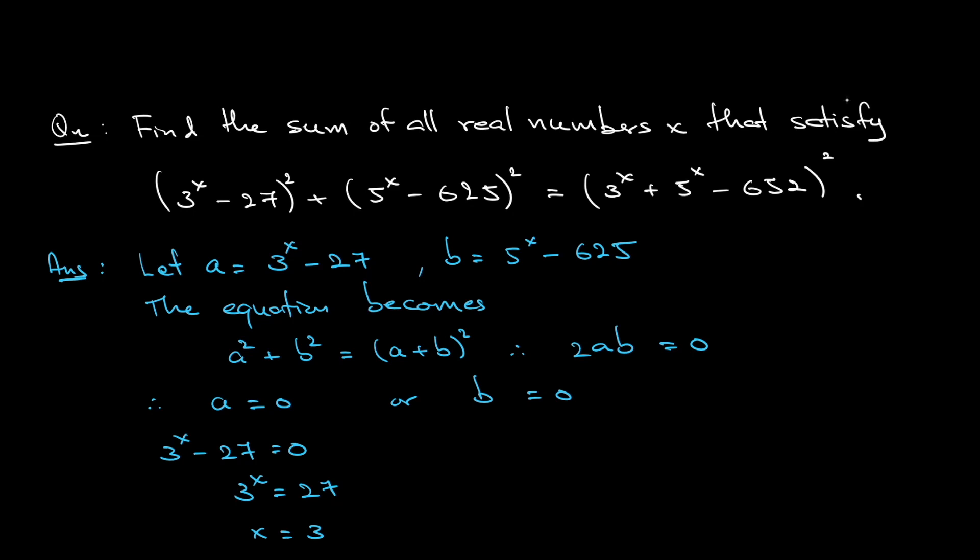For b, do the same thing. b was originally 5^x - 625. So 5^x = 625, meaning x is log₅(625). So that is 4.